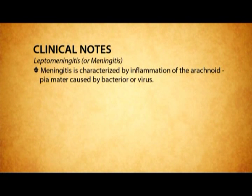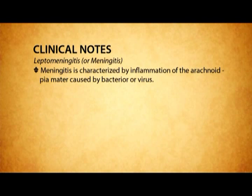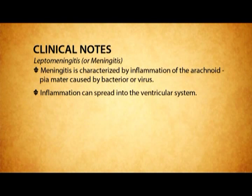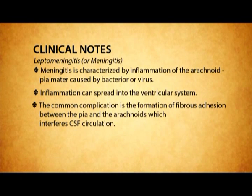There are clinical notes. The commonest clinical condition that affects the leptomeninges is the inflammatory process called leptomeningitis, or simply meningitis. Meningitis is characterized by inflammation of the arachnoid and pia mater caused by bacteria or virus. The inflammation can spread into the ventricular system. A common complication is the formation of fibrous adhesion between the pia and arachnoid, which interferes with CSF circulation.